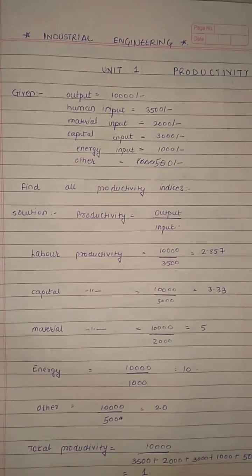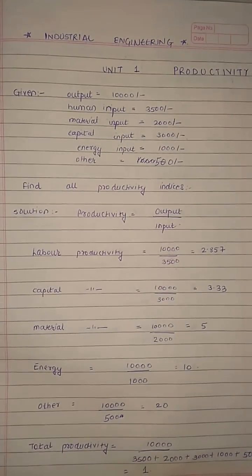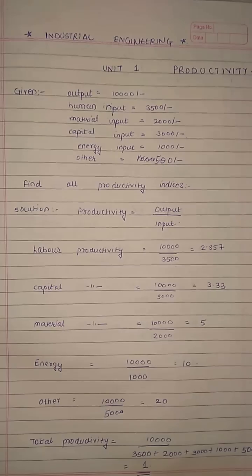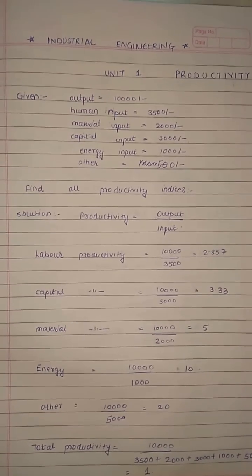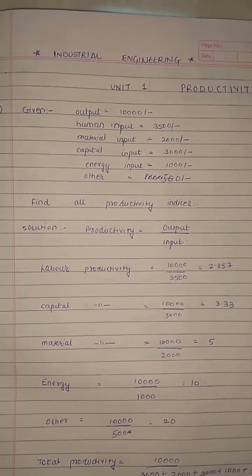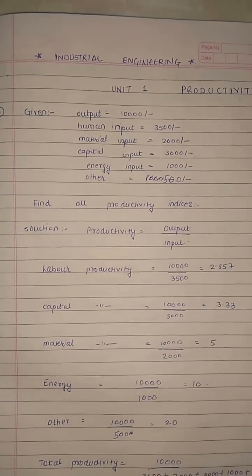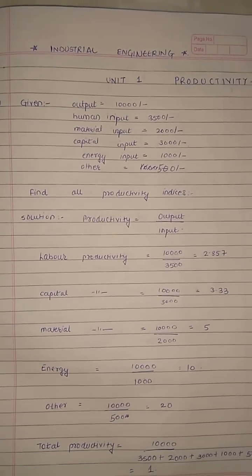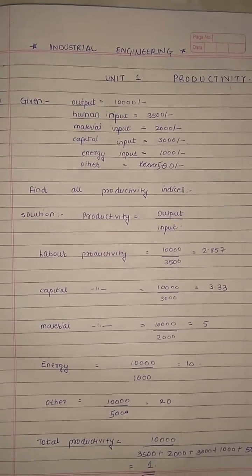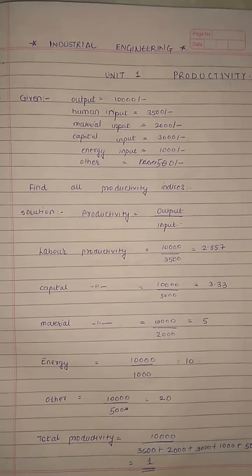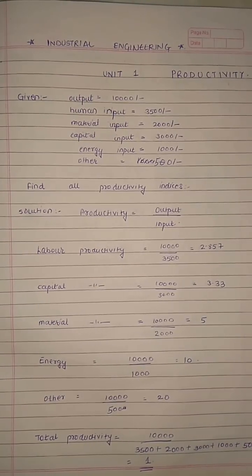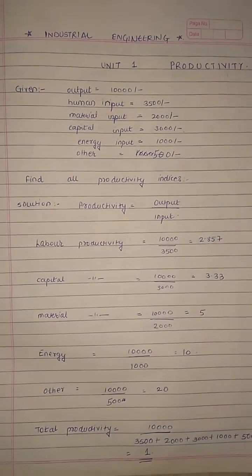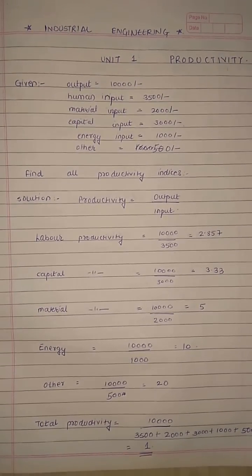This is the first type of numerical. We have been given various outputs and we have to find all the productivity indices — this will be the exact question in the examination. The given data includes total output, human input which is the labour, material cost, capital used, energy input, and other miscellaneous expenses given as 500 rupees.